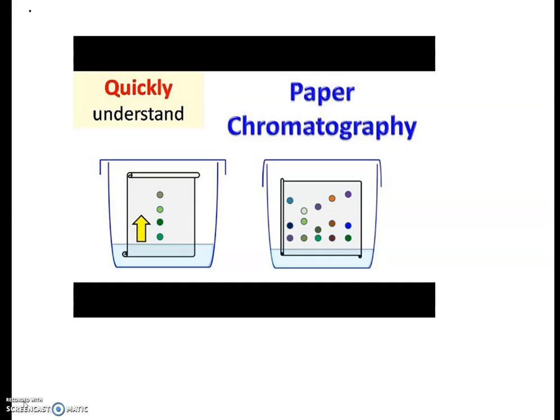Here we are using paper chromatography because we are using the stationary phase as paper. There are a stationary phase and mobile phase. So the stationary phase in paper chromatography is a paper, so it is known as paper chromatography.